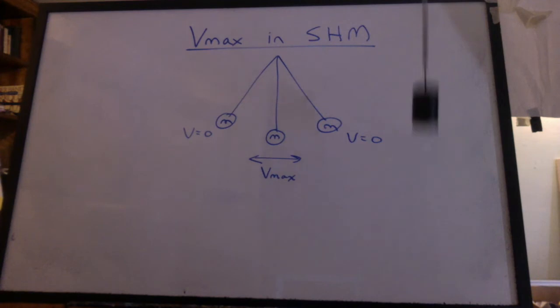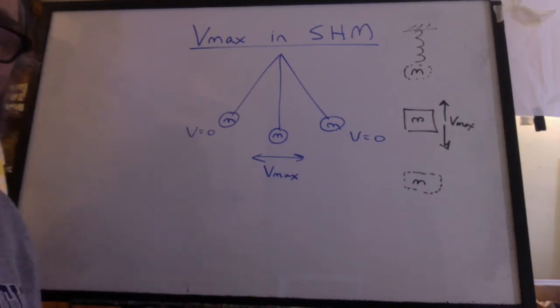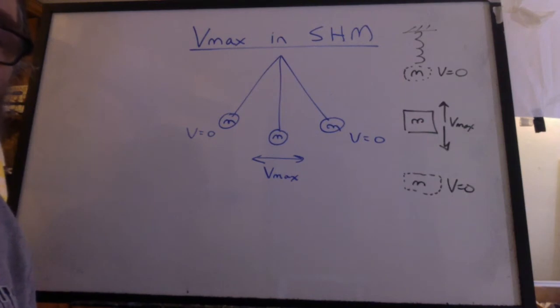How about for the mass on a spring? Where's Vmax? I hope you could see that the maximum velocity occurred at the equilibrium position. And just like with the pendulum, the velocity was zero at the ends, because it's got to stop to turn around.